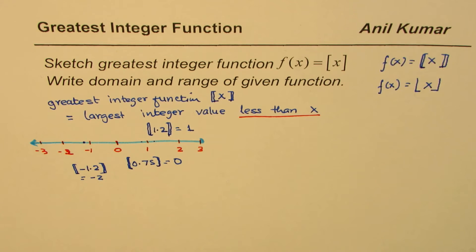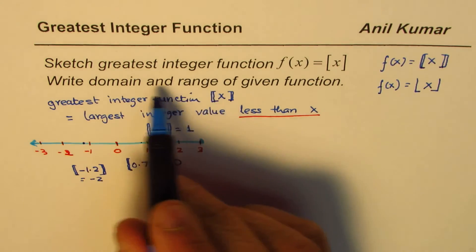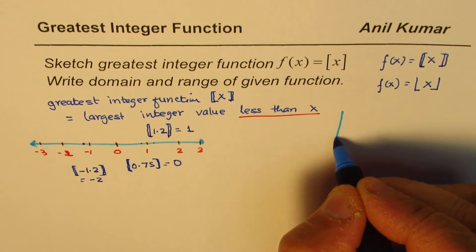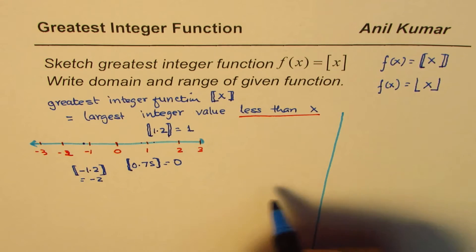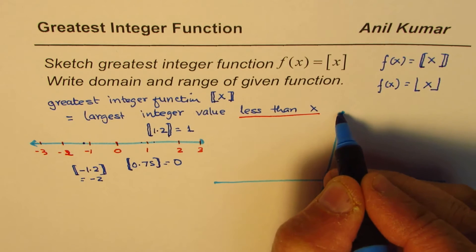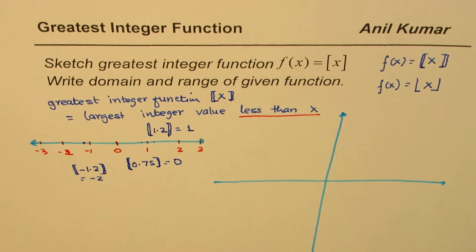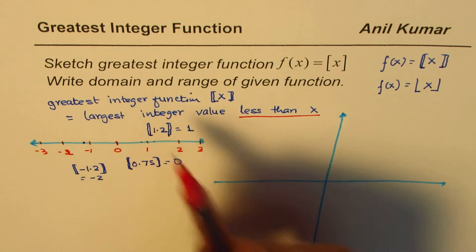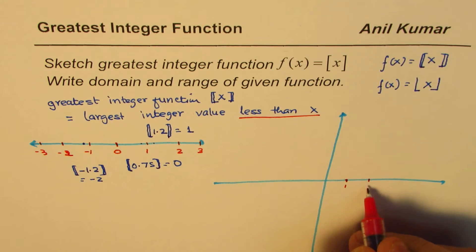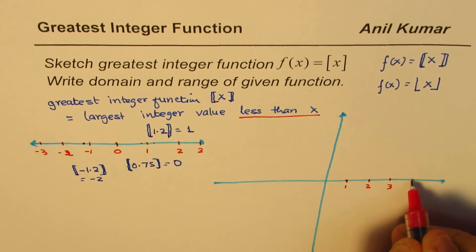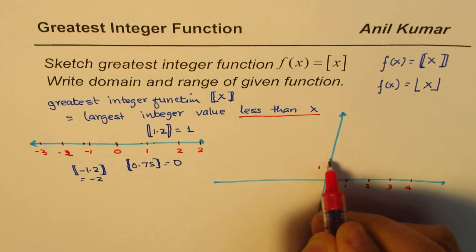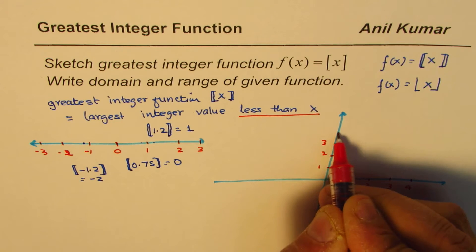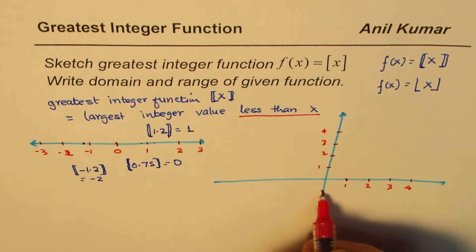That is how we define this function. Now with that definition in mind it's easy to sketch the graph. So let's use this space to sketch the graph — that is my y-axis and this is x. I'll make a rough sketch and label numbers: 1, 2, 3, 4 on the positive side.